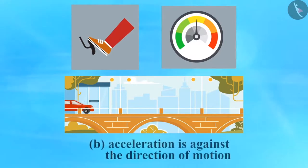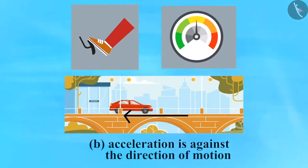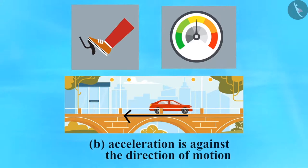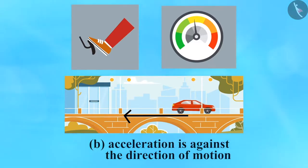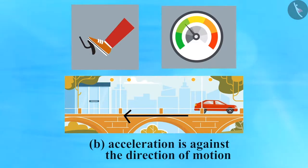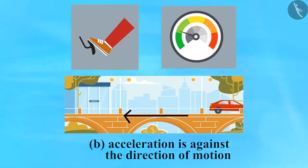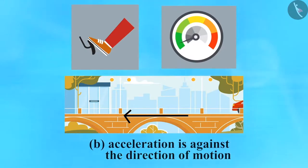B: Acceleration against the direction of motion. The driver applies the brake and the car slows down. Although the car's direction of motion is towards the right, the acceleration is applied in the opposite direction — so the acceleration is negative.